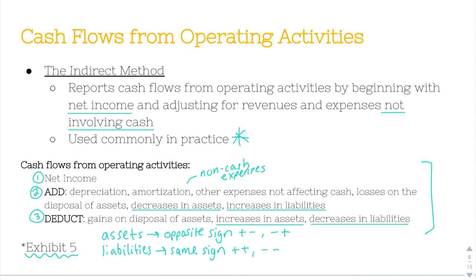Why do we do that? Let's take two examples. An increase in an asset — say inventory increasing — you are paying cash for that inventory in order to add it to your assets, so it's a cash outflow. That is why cash is decreasing when we increase an asset. An increase in inventory, because we have to buy it, represents a decrease in cash — so that's why we would deduct it.